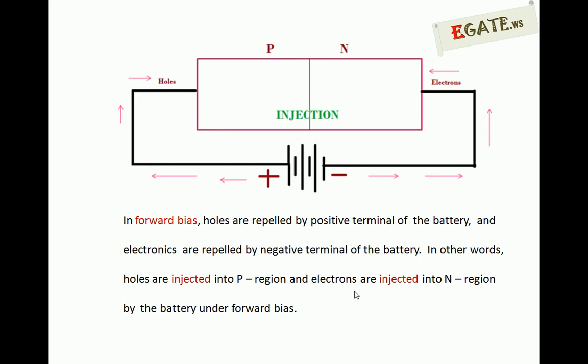Whenever the p-side voltage is more than the n-side voltage of the diode, the diode is said to be under forward bias. Here, using a diagram with a single battery under forward bias: holes are repelled by the positive terminal and electrons are repelled by the negative terminal of the battery. This means holes are injected into the p-side and electrons are injected into the n-side by the battery. This first-level process is called injection.